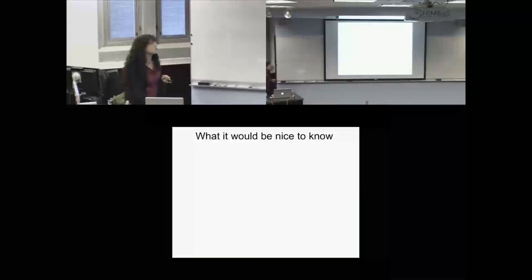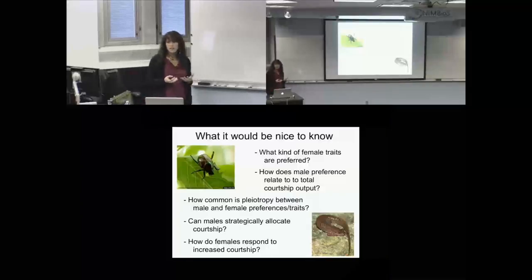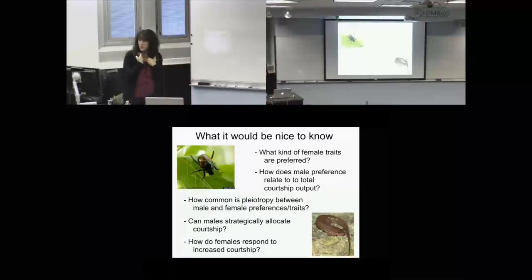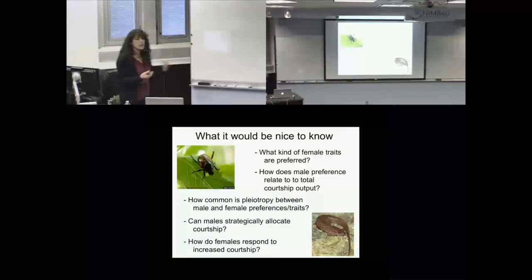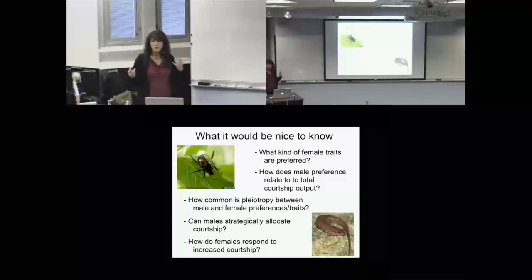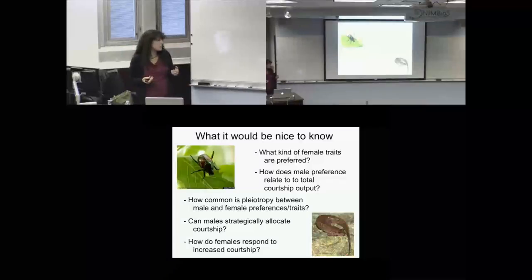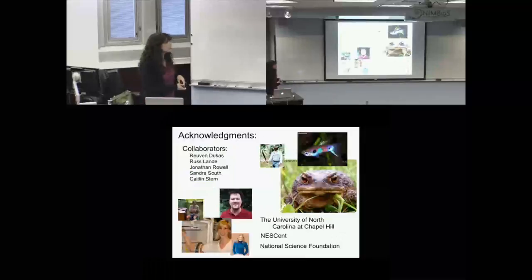My wish list of what I'd like to know empirically: What kinds of female traits are preferred — just high fecundity, or are there ever arbitrary badges? How do male preferences relate to total courtship output — can males with preferences court more? How common is pleiotropy? Can males strategically allocate courtship? How do females respond to increased courtship — do they ever prefer increased courtship? With that, I'd like to thank my collaborators and Nescent, UNC, and NSF.